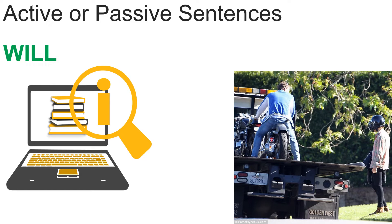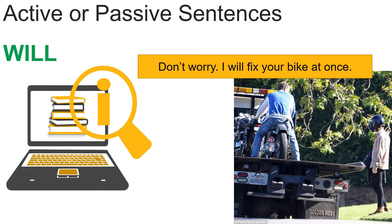The big question in this video is: how do we construct passive sentences with 'will' and 'be going to'? Let's take a look. Here I have an example — there is a picture with a man having a problem with his bike, and another man tries to help him and says: 'Don't worry, I will fix your bike at once.'